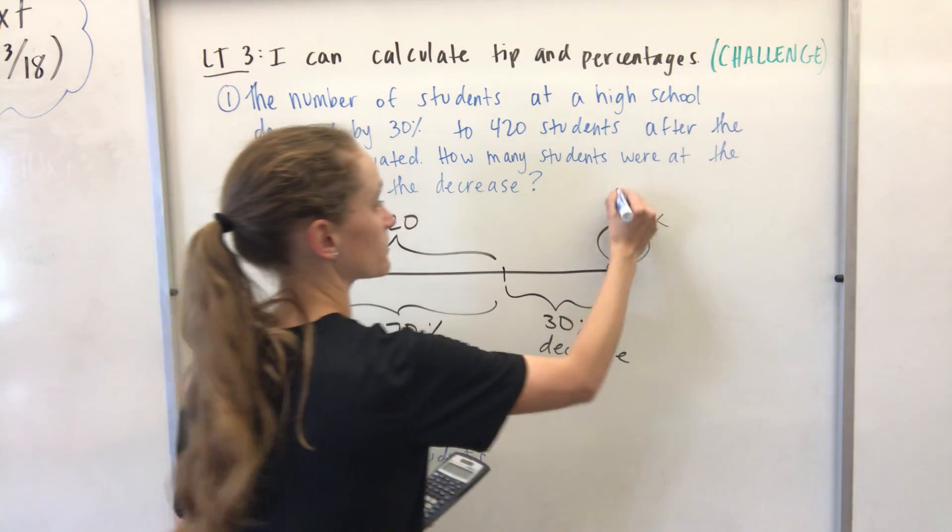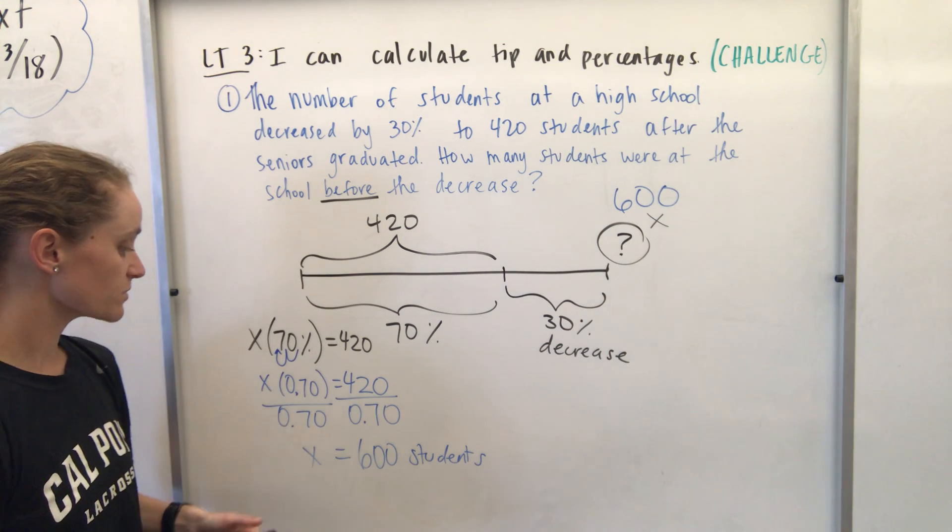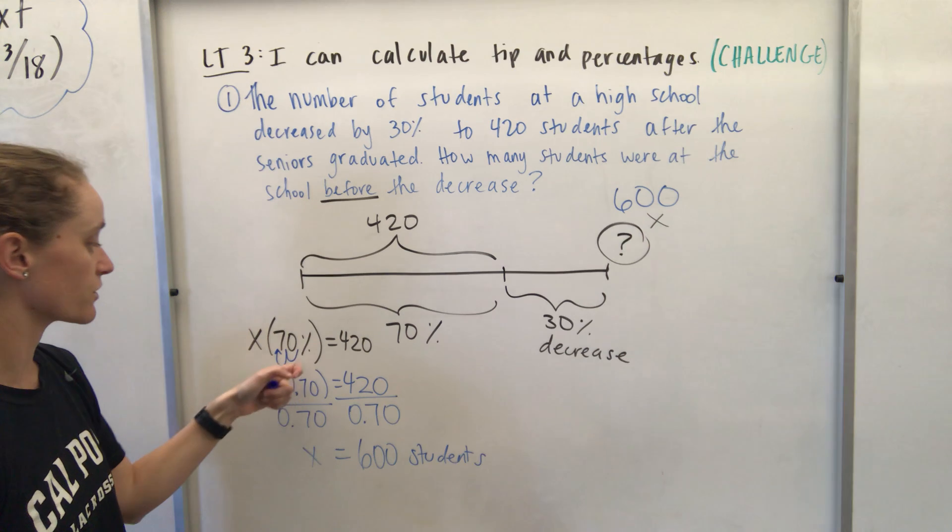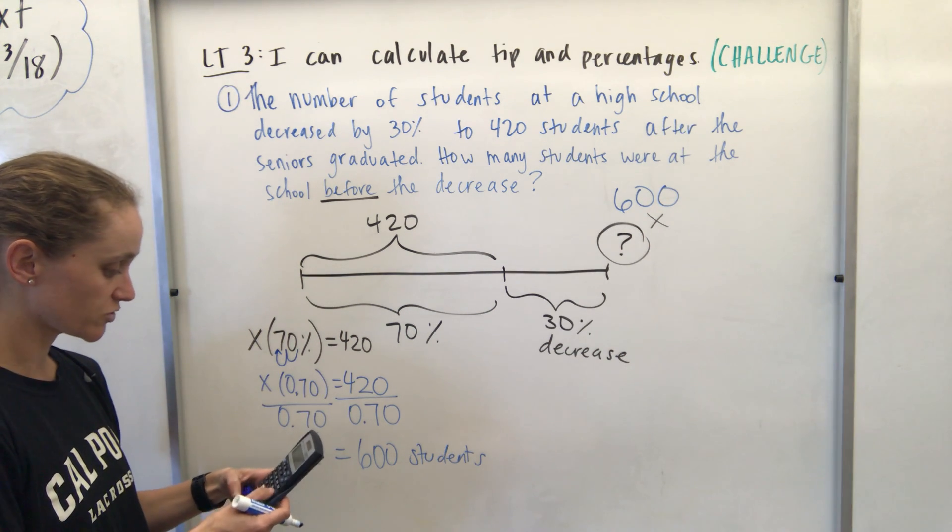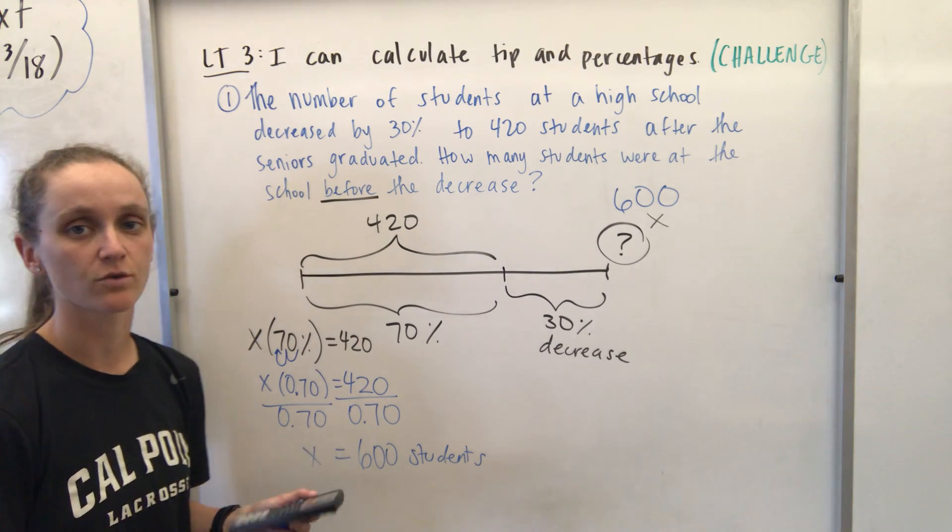So that means that there were 600 students at the school before that decrease. And the nice thing about these problems is that once you get an answer, you can make sure it makes sense. Like, let's say you put 30% here on accident instead of 70. If I do 420 divided by 0.30, I would have gotten 1,400 kids.